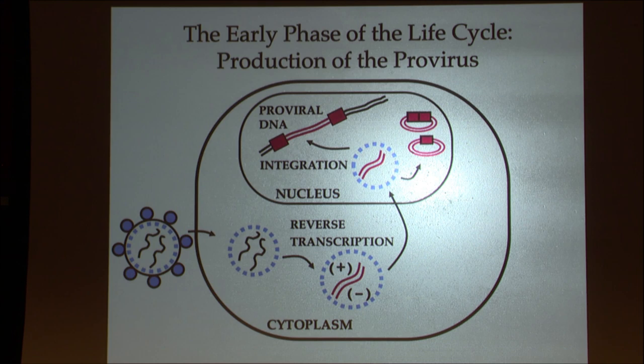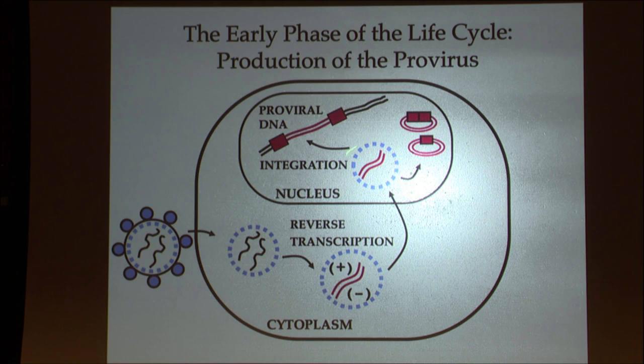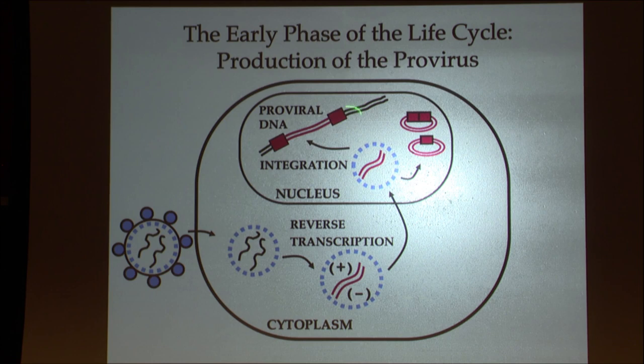Reverse transcriptase does both — it's a dual-capable enzyme and more. In contrast to that need for mitosis, some viruses like HIV have evolved mechanisms to actually enter the nucleus of a non-dividing cell, giving them the capability to successfully infect strictly non-dividing cells like some memory T cells. That was a clear advance that promoted the spread of the virus into new cell types.